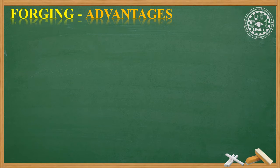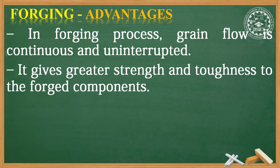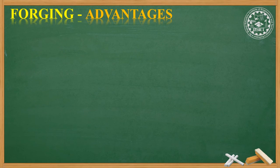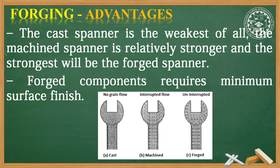In the forging process, grain flow is continuous and uninterrupted, which gives greater strength and toughness to the forged components. If we refer to the figure in the next slide, it shows three spanners — one produced by casting, one by machining, and the third by forging. The casted spanner is the weakest of all, the machined spanner is relatively stronger, and the strongest is the forged spanner.